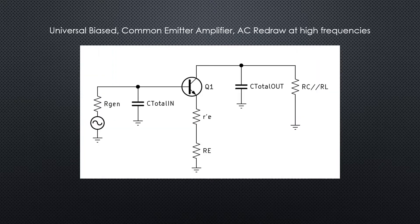So here's our AC redraw at high frequencies and we can see we've got our c total in and our c total out. This is how we calculated that final fc high cutoff frequency.